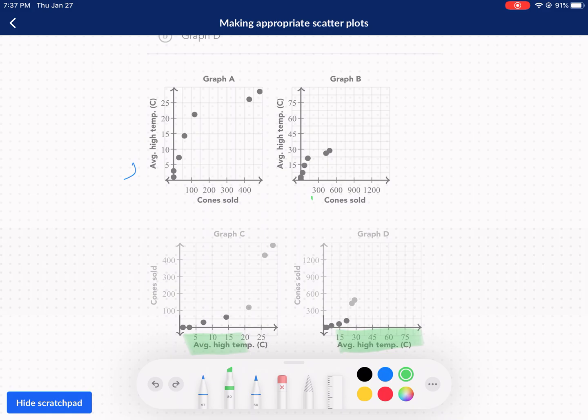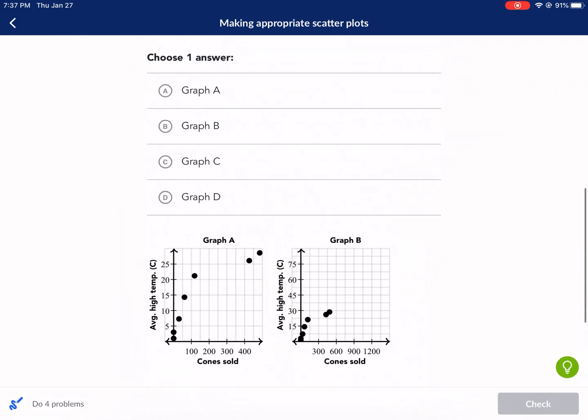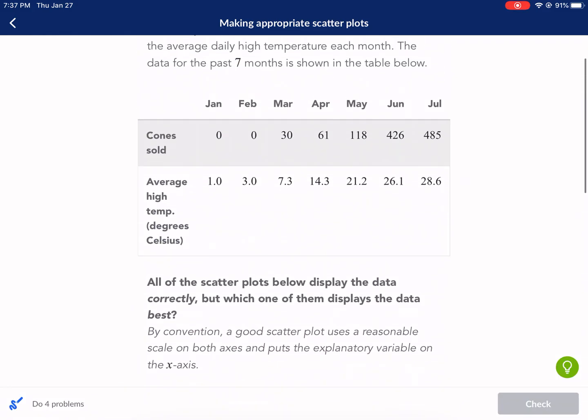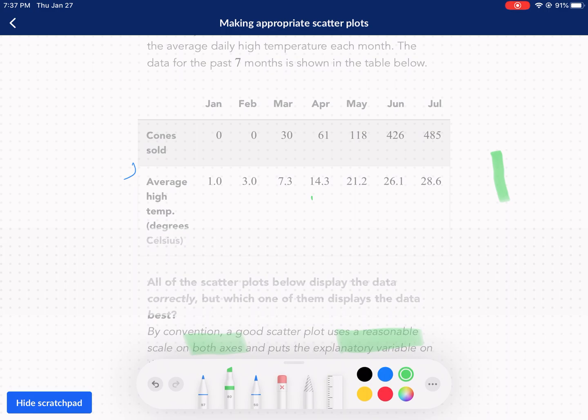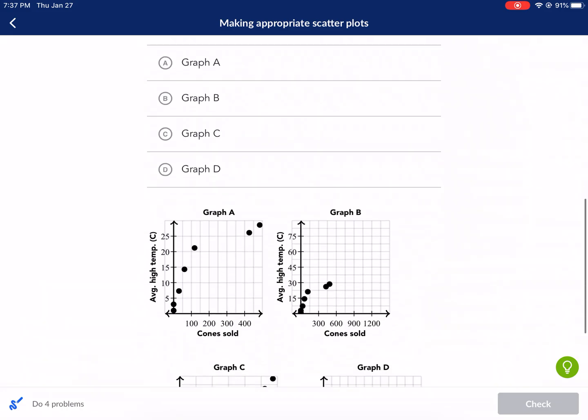And then what we want is we don't want something that has too much space in it. All we need is average temperatures all the way to 28.6 from one, and we need cones sold from zero to 485. That's all we need. We wouldn't need average temperature going all the way to 100 degrees Celsius. That'd be outrageous first off, but then secondly, it just makes for a bad graph.